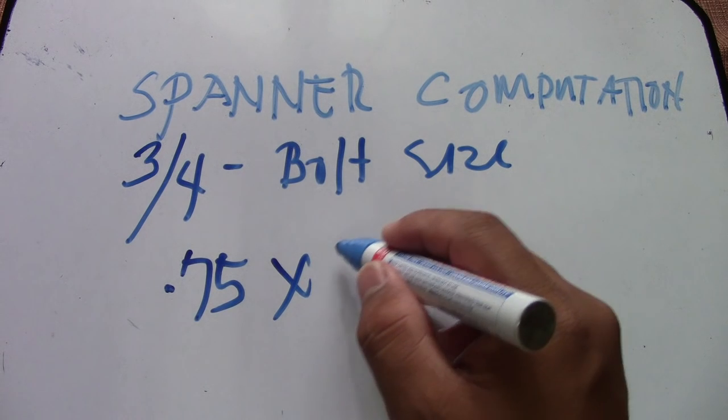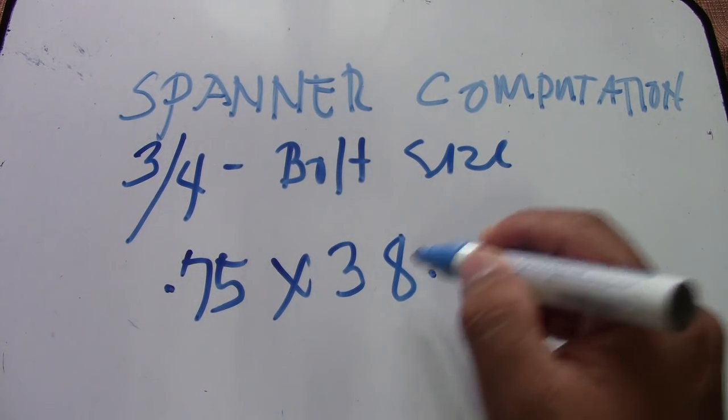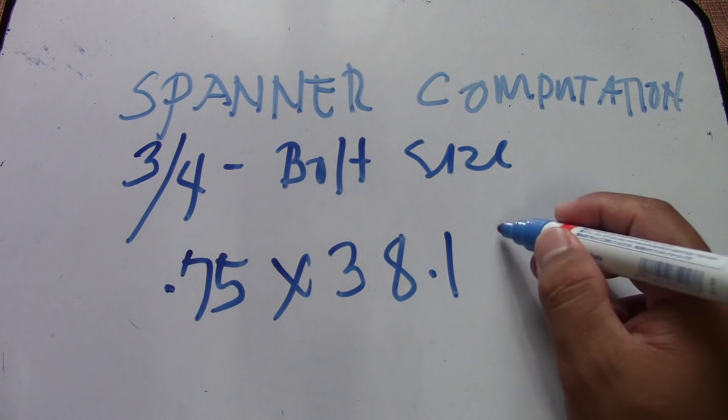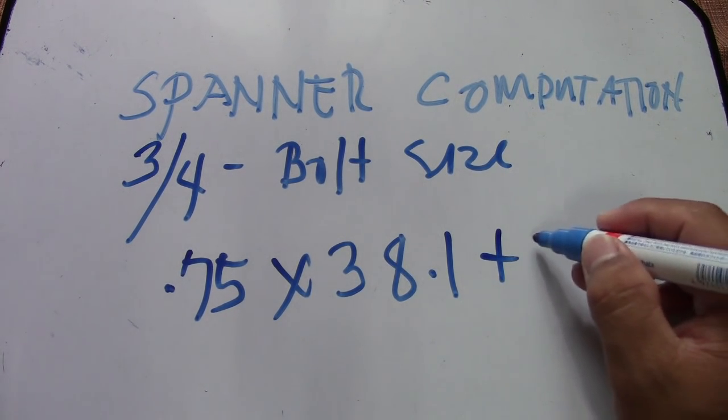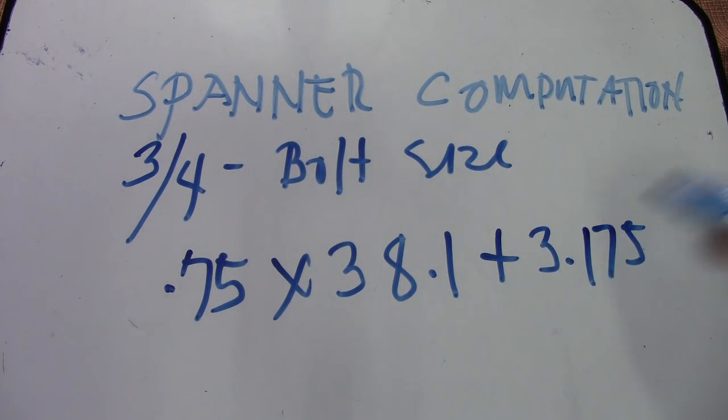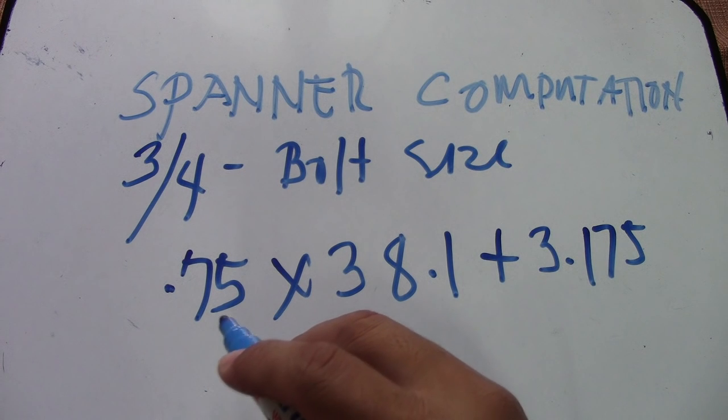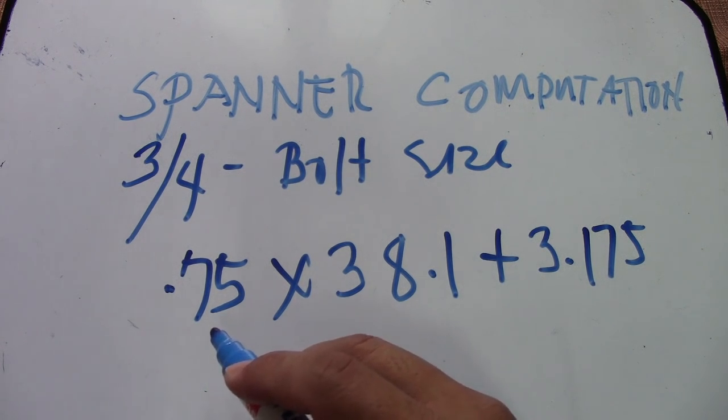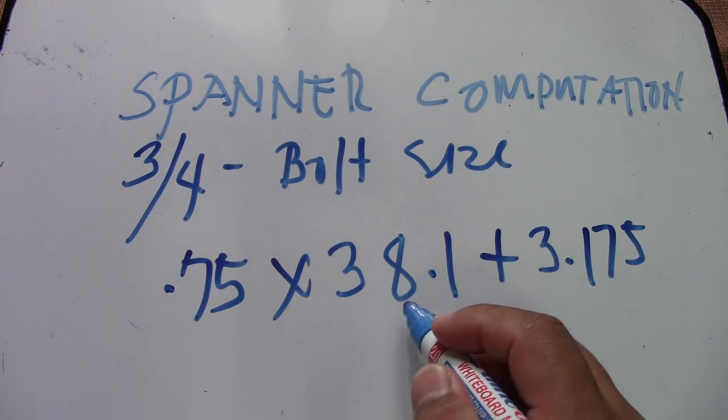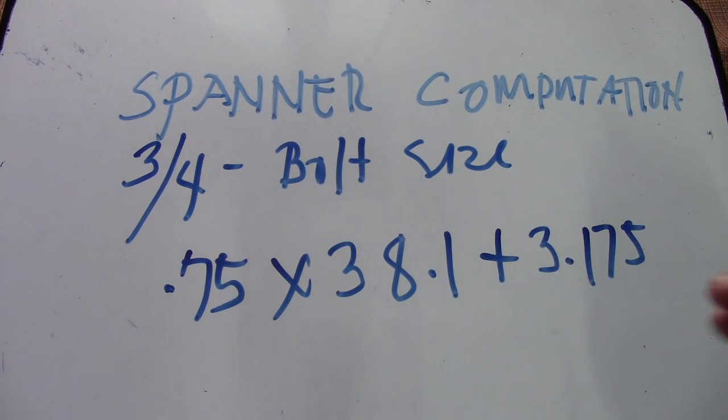Multiply it by 38.1, and then add 3 millimeters, or 3.175. This is the formula for our spanner computation: bolt size multiplied by 38.1 plus 3 millimeters or 3.175.